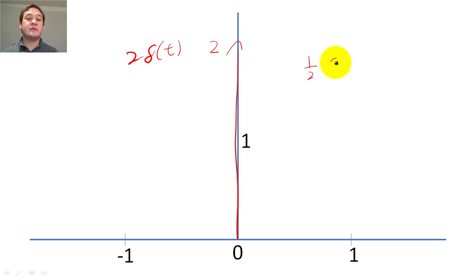If we add or subtract from the argument of the delta function, we shift the function.